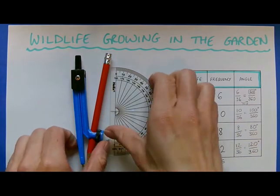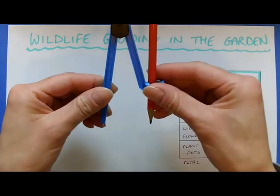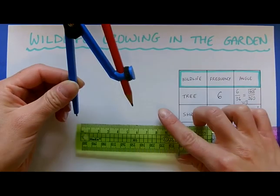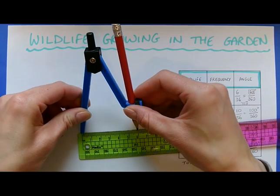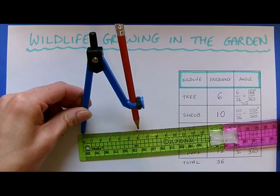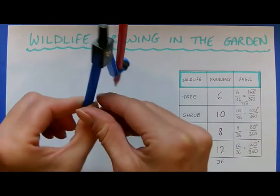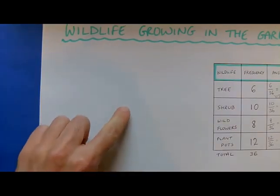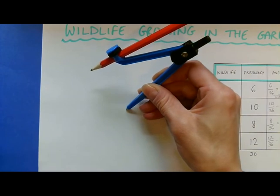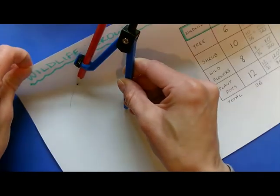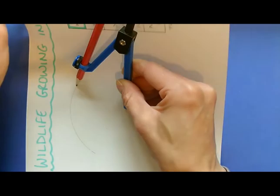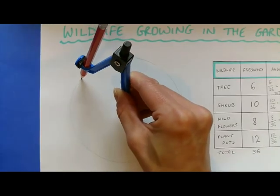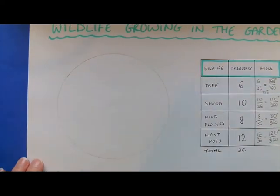So let's draw this. Open your compass to around 5 or 6 centimetres to make a fairly big circle. Put the compass in the hand you write with, choose a suitable point in the middle of your page, apply pressure on the pivot point, and then turn your page to draw your circle. And there you have it — a pie chart ready to draw.